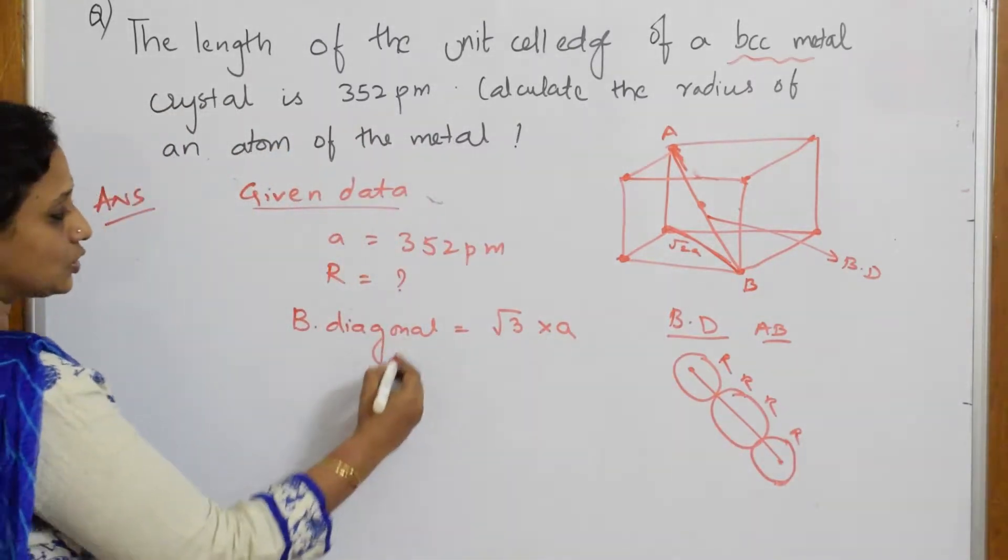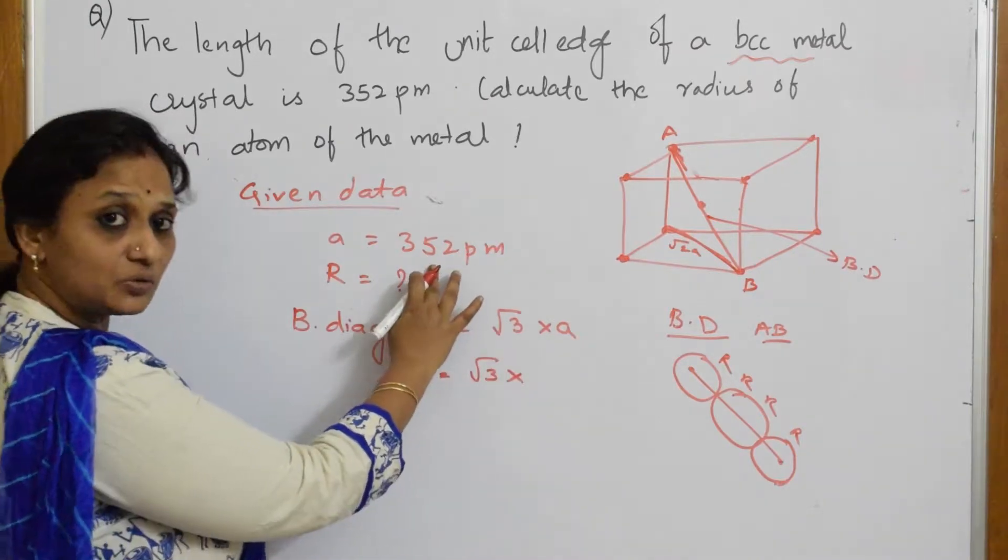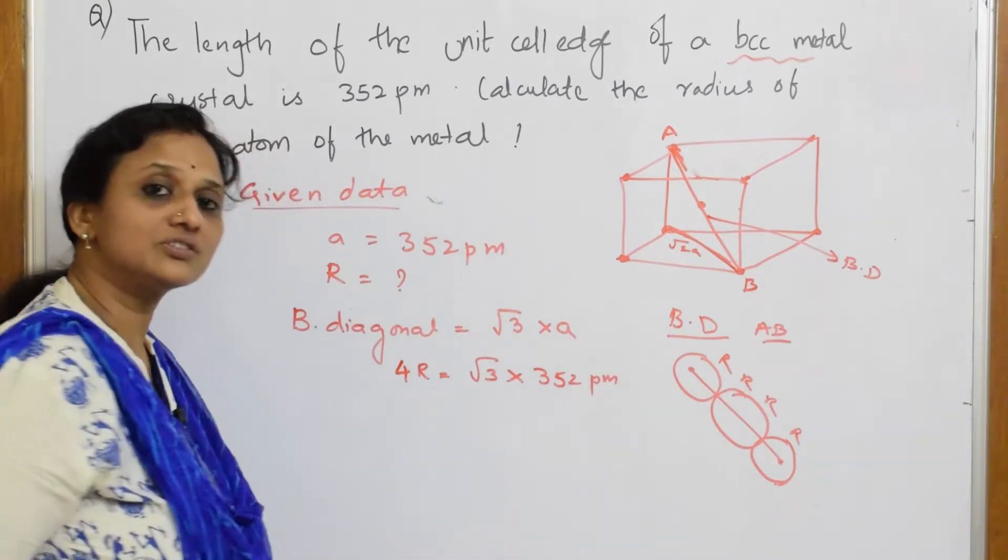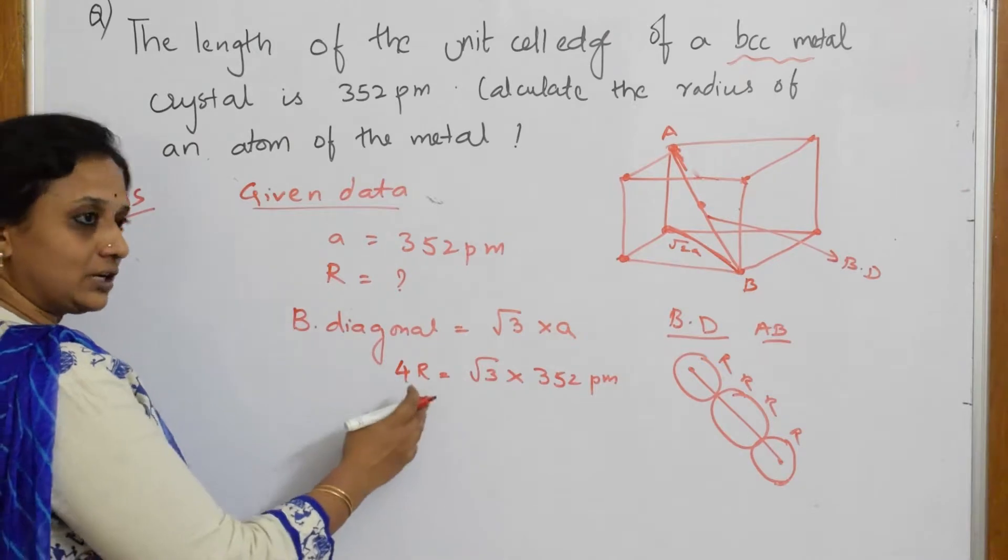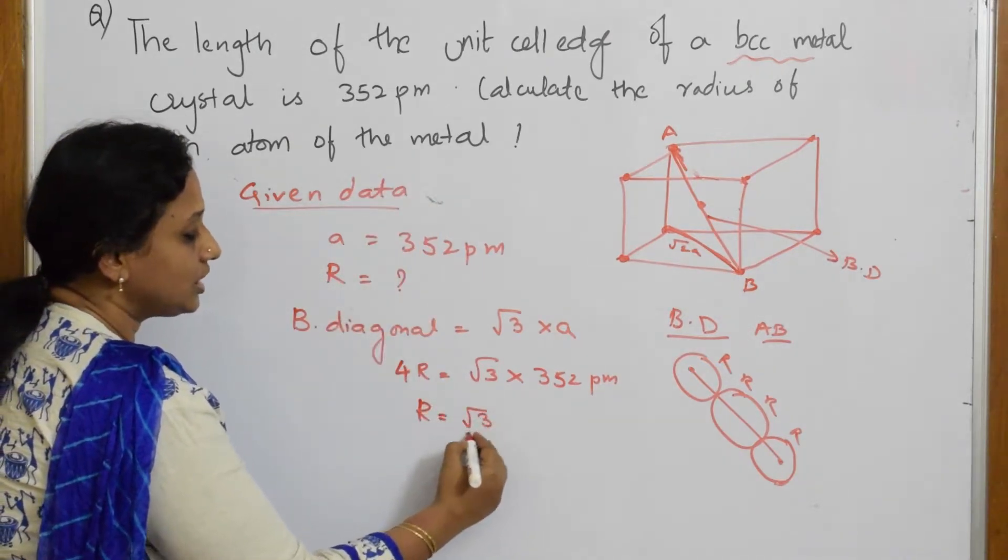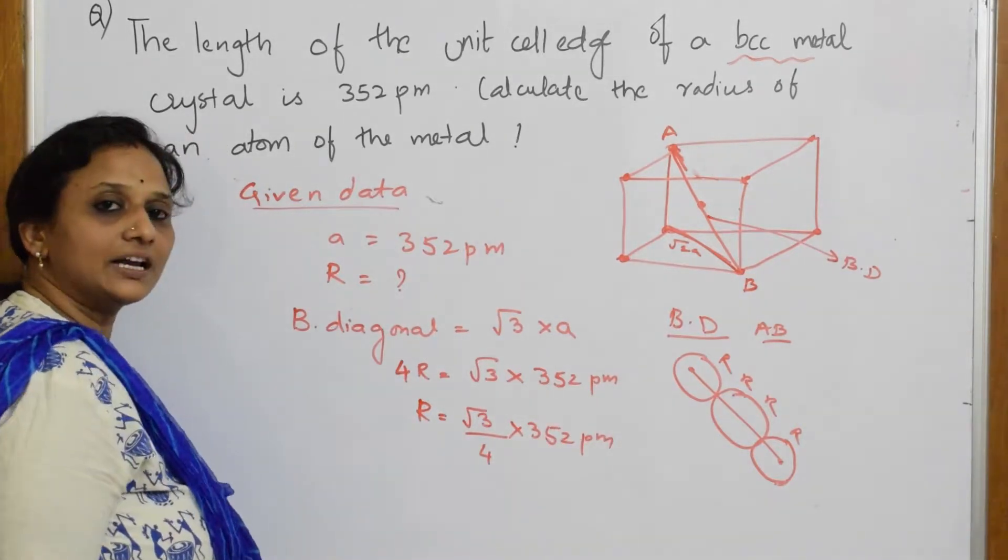It is equal to √3 into a. Already they've given me a = 352 picometer. Please write the units. So now I have to find out R. That's what they've asked me. So R = (√3/4) × 352 picometer.